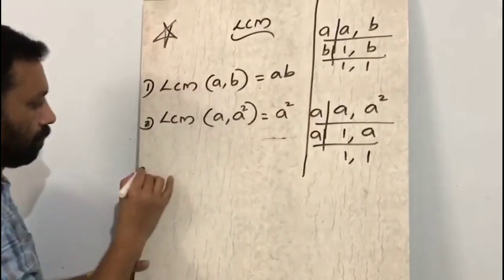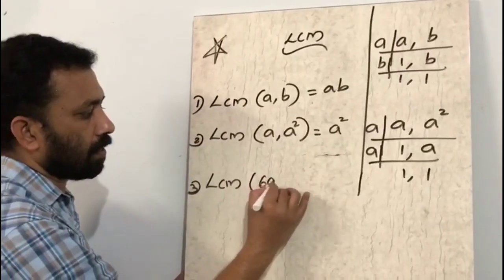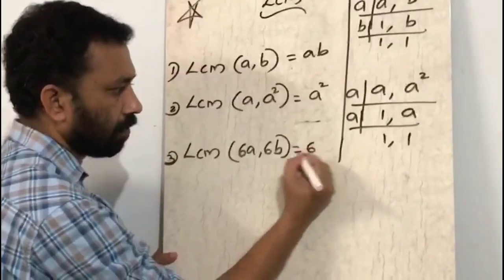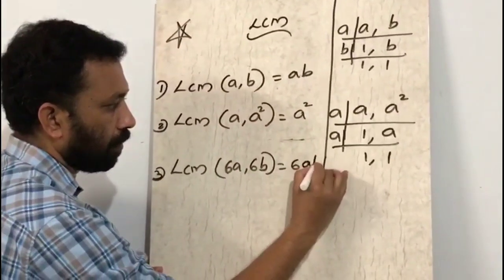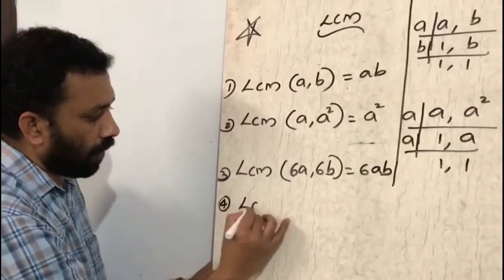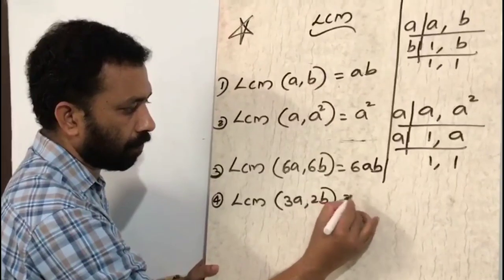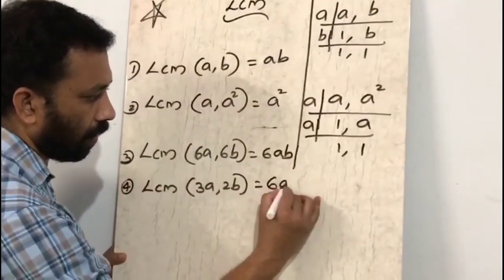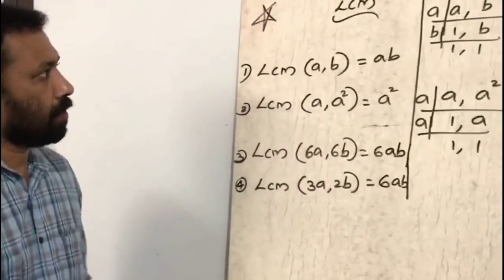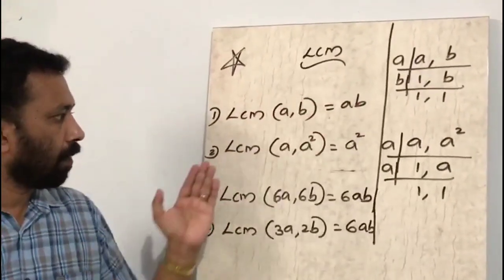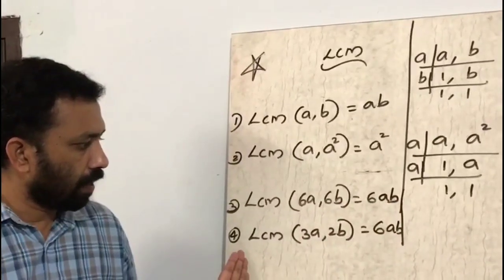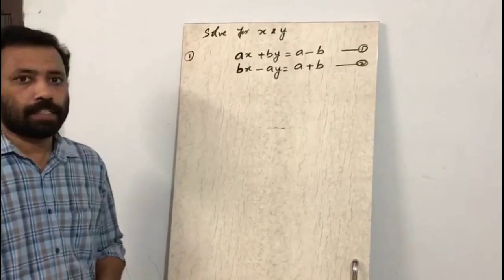What is the LCM of 6a and 6b? The LCM of 6 and 6 is 6, and the LCM of a and b is ab, so the LCM is 6ab. What is the LCM of 3a and 2b? The LCM of 3 and 2 is 6, and the LCM of a and b is ab, so the LCM is 6ab.